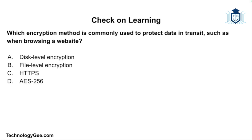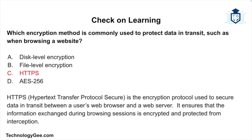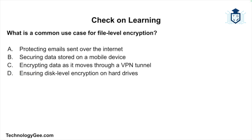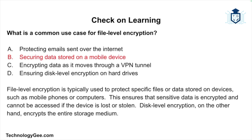Question two: which encryption method is commonly used to protect data in transit, such as when browsing a website? The correct answer is HTTPS — Hypertext Transfer Protocol Secure. HTTPS is the encryption protocol used to secure data in transit between a user's web browser and a web server, ensuring that information exchanged during browsing sessions is encrypted and protected from interception. Question three: what is a common use case for file level encryption? The correct answer is securing data stored on a mobile device. File level encryption protects specific files or data stored on devices such as mobile phones or computers, ensuring sensitive data is encrypted and cannot be accessed if the device is lost or stolen. Disk level encryption, by contrast, encrypts the entire storage medium.